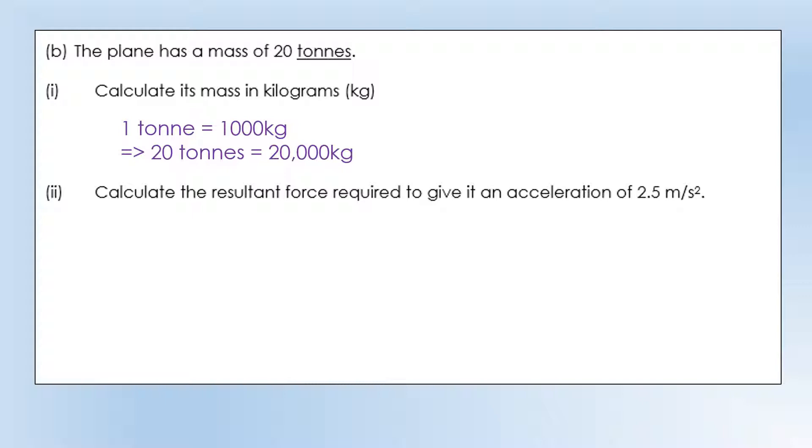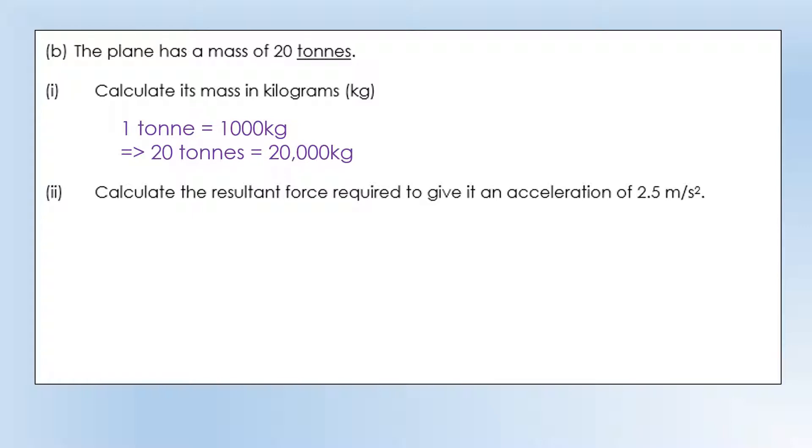So calculate the resultant force required to give it an acceleration of 2.5 metres per second squared. These are the stages we use for using equations. So the equation that we need is this one, resultant force equals mass times acceleration. This time we don't need to rearrange it, because resultant force is already the subject. We substitute in the numbers that we've got, mass would need to be in kilograms.